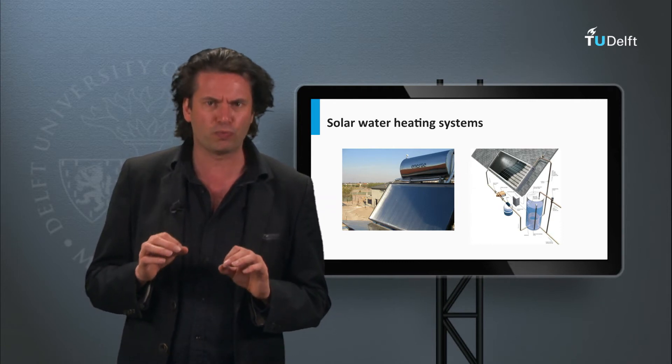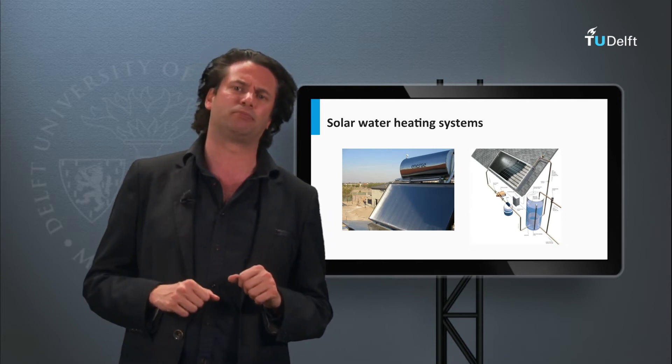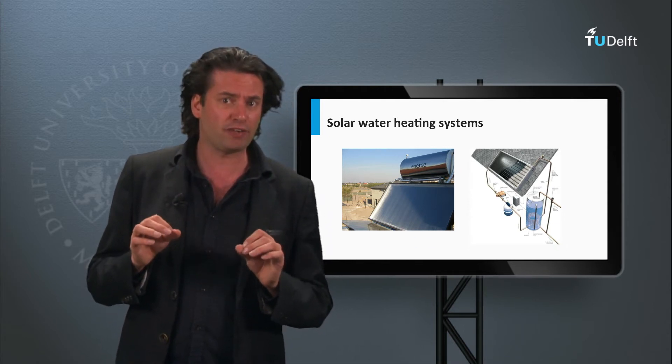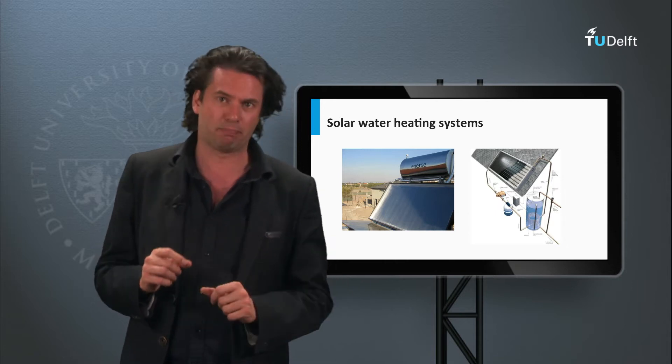The amount of hot water produced by a solar water heater depends on the type and size of the system, the amount of sunshine available at the site and the seasonal hot water demand pattern.